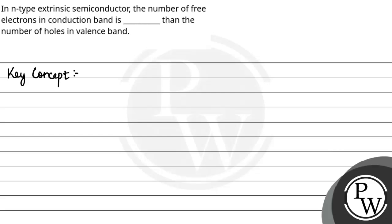n-type extrinsic semiconductor. So, in a n-type extrinsic semiconductor, the number of free electrons in the conduction band is greater compared to the number of holes in the valence band. This is because n-type semiconductors are doped with donor atoms which provide extra electrons, increasing the number of electrons in the conduction band. So, in a n-type extrinsic semiconductor, the number of free electrons in conduction band is greater than the number of holes in valence band.